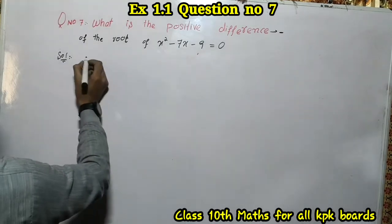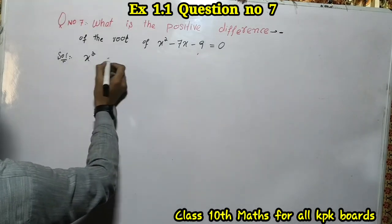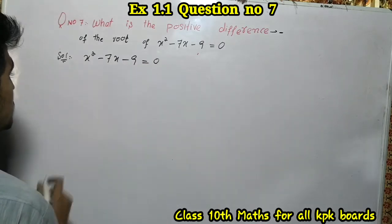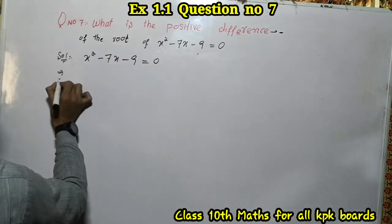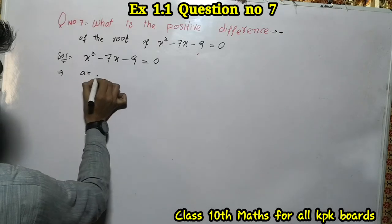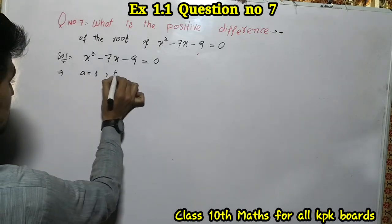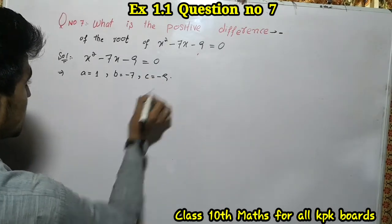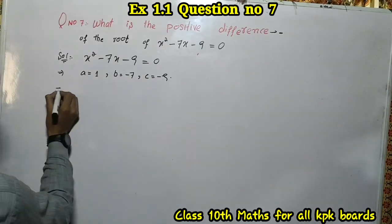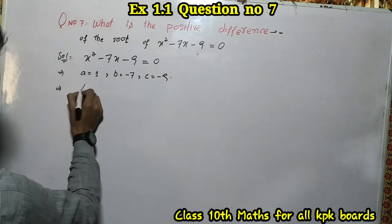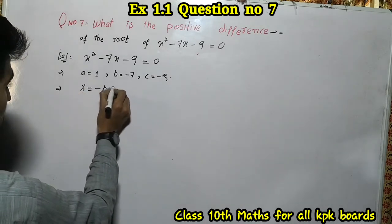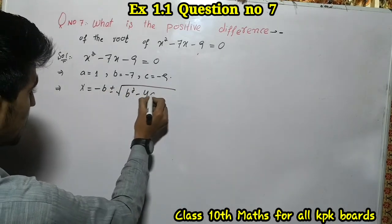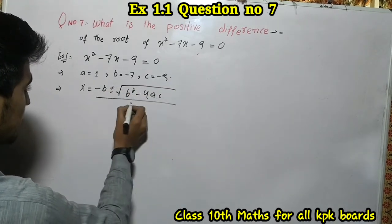We have x² - 7x - 9 = 0, where a = 1, b = -7, and c = -9. We will use the quadratic formula: x = (-b ± √(b² - 4ac)) / 2a.